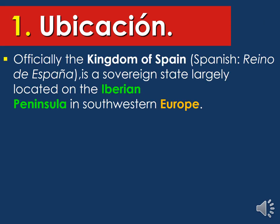Notice how the word ubicación has an acento on the O — make sure that you include it in your notes to maintain proper grammar. Officially, the Kingdom of Spain, or in Spanish Reino de España, is a sovereign state largely located in the Iberian Peninsula in southwestern Europe. Why is it called a sovereign state? Because they're ruled by a monarch. They also have a prime minister that acts as a president, but the one that makes the final decisions as head of state and head of the military forces is going to be the king.